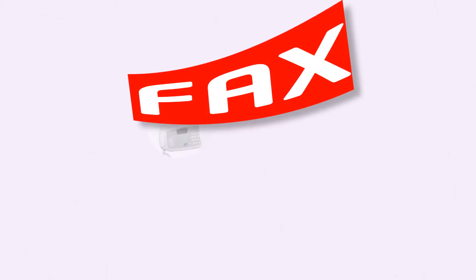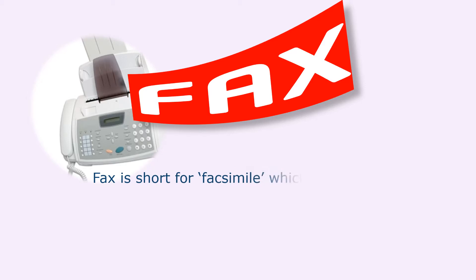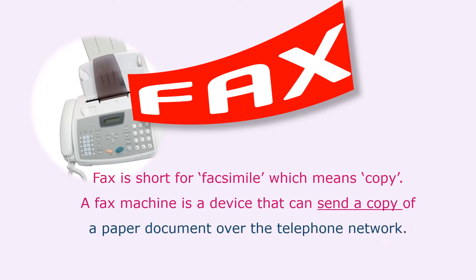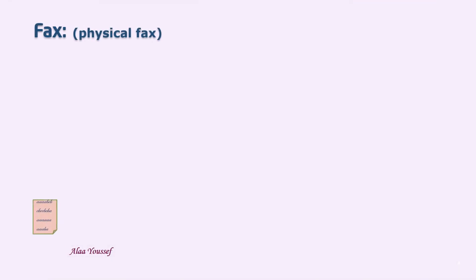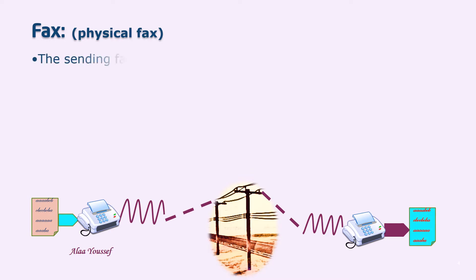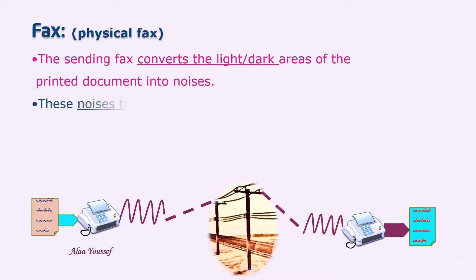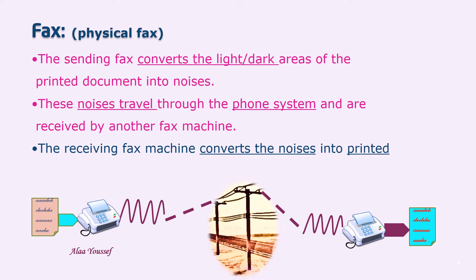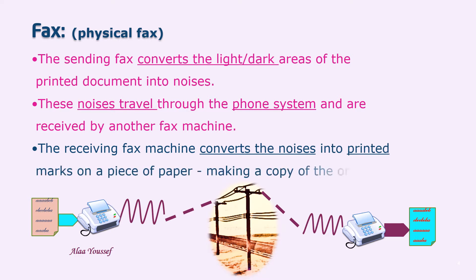Fax is short for facsimile, which means copy. A fax machine is a device that can send a copy of a paper document over the telephone network. The sending fax converts the light or dark areas of the printed document into noises. These noises travel through the phone system and are received by another fax machine, which converts them into printed marks on paper, making a copy of the original document. This is known as physical fax.